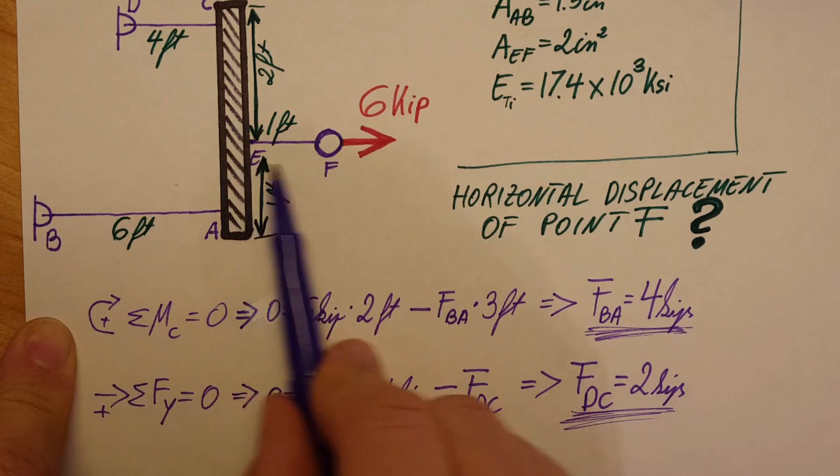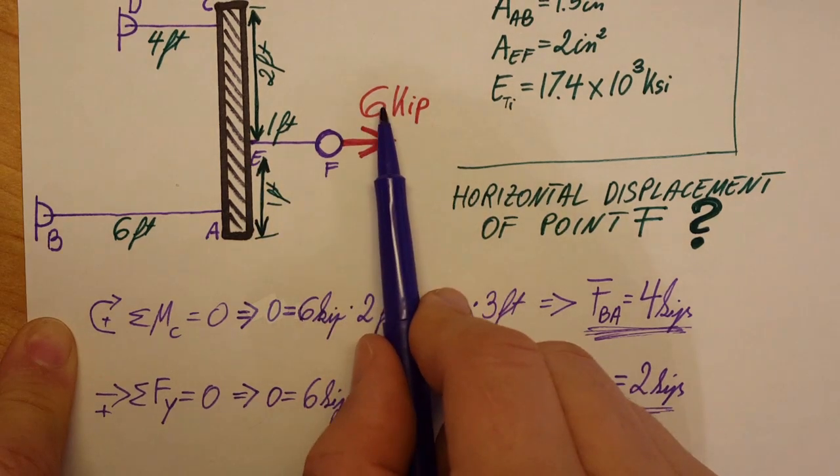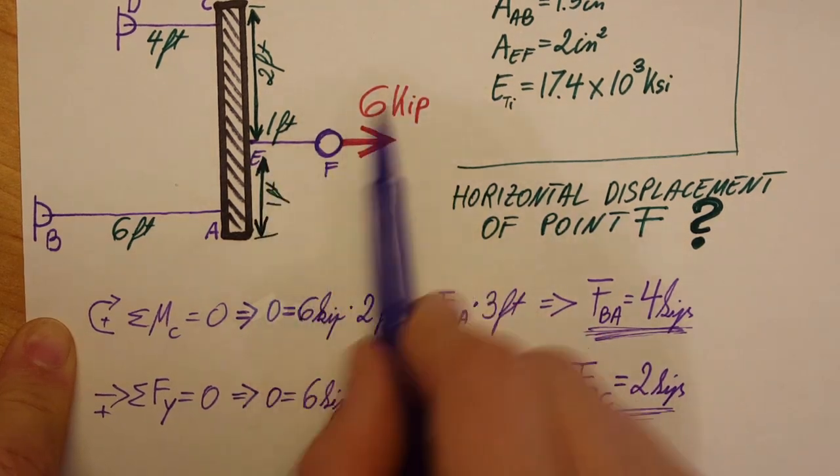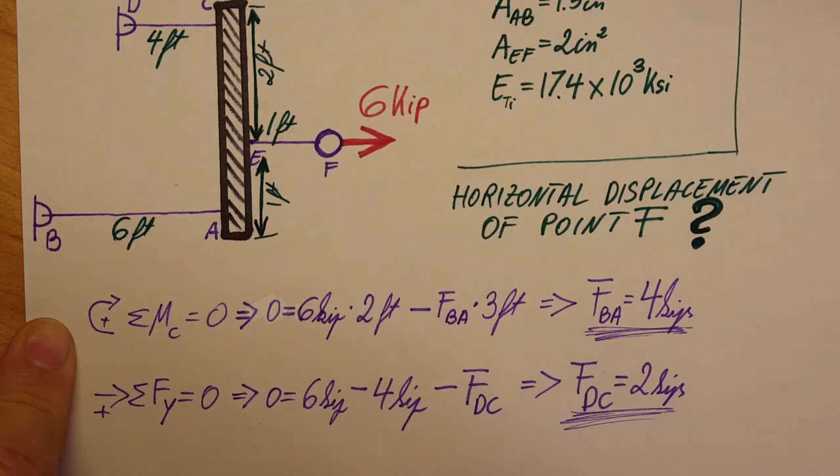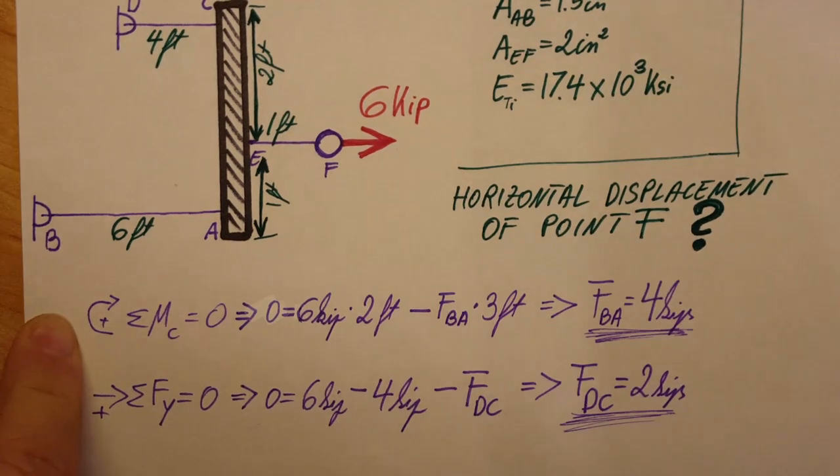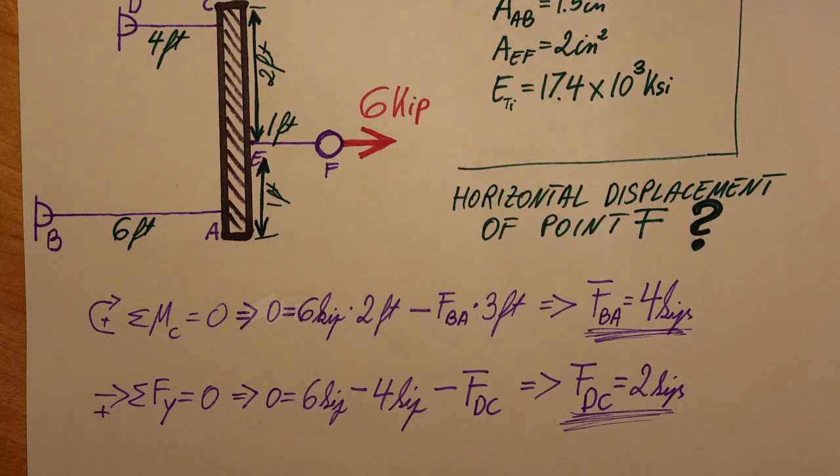The force in rod EF is what we have given, is six kips. So therefore we have all the forces and we can go ahead and start calculating our deflections, our deformations.